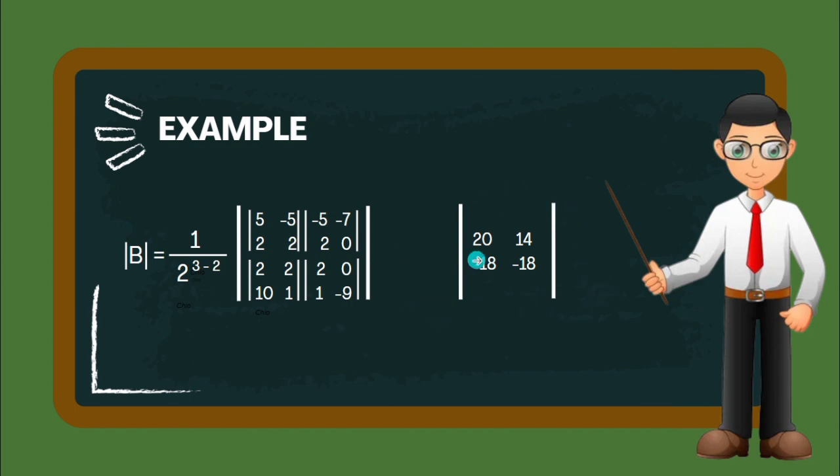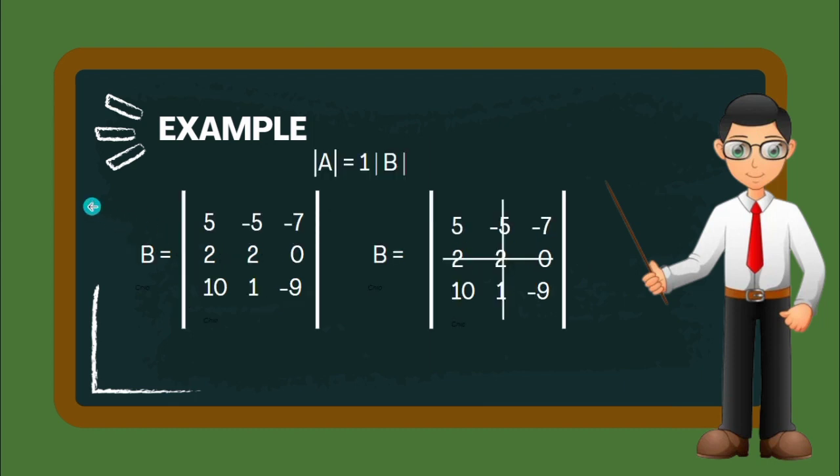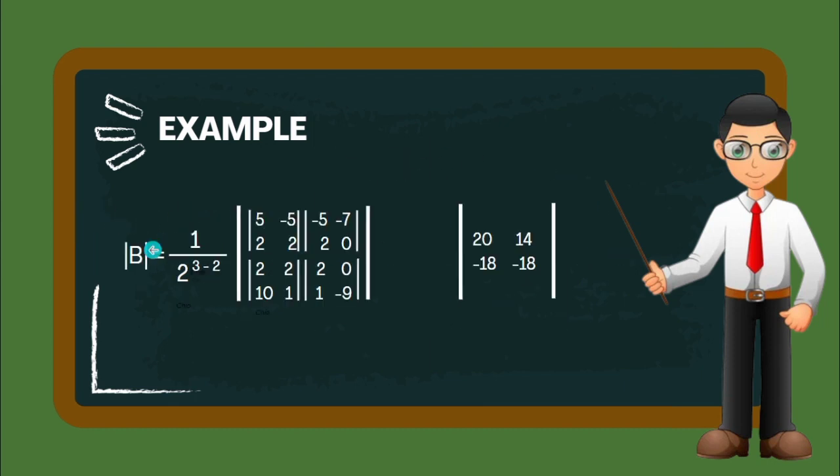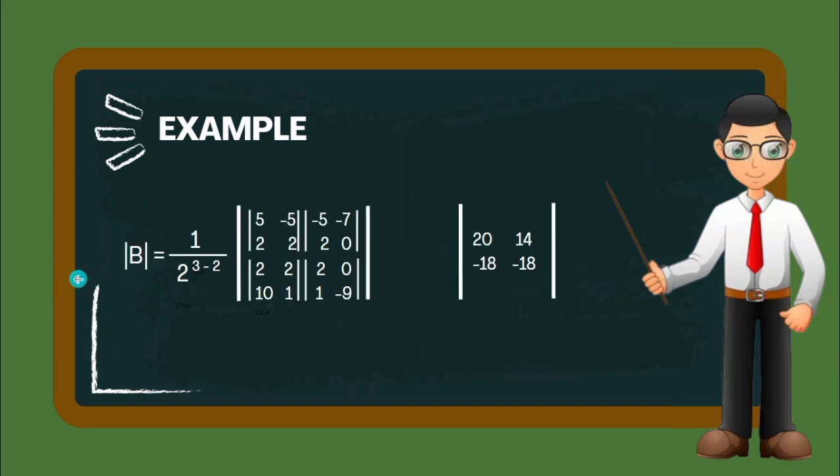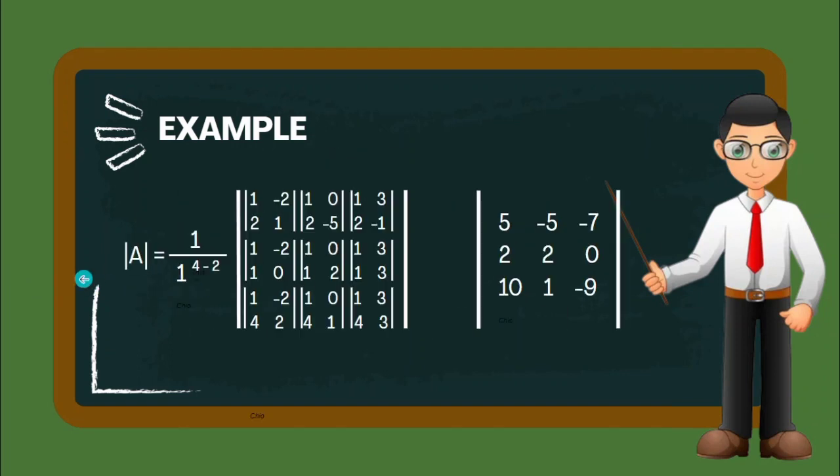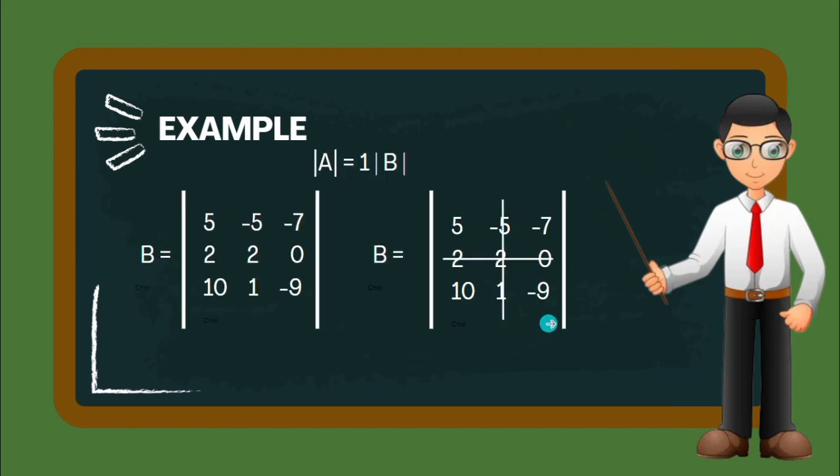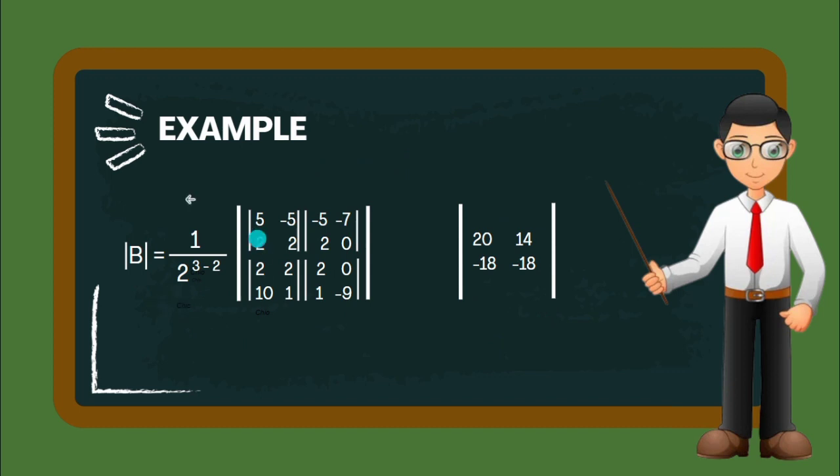Since we have a 2 by 2 matrix from 3 by 3, don't forget to apply the formula 1 over 2, which is our pivot element, raised to 3, which is the number of rows and columns, minus 2. We can now solve for the determinant of matrix A. The determinant of A equals 1 times 1/2 times the determinant of this matrix.